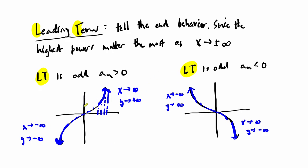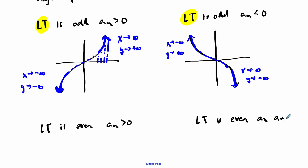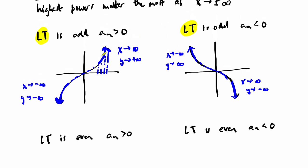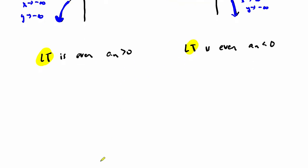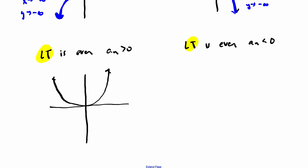Now let's look at leading terms being even. When the leading term is even and the coefficient is positive, the end behavior looks like a parabola — specifically like x squared. If we sketch out a quick parabola with a positive coefficient, something like this, the end behavior describes all even-degree polynomials with a positive leading coefficient. What happens in the middle — the interim — is not so easy to predict; we have other tools for that, but it's not going to be based on the leading term.